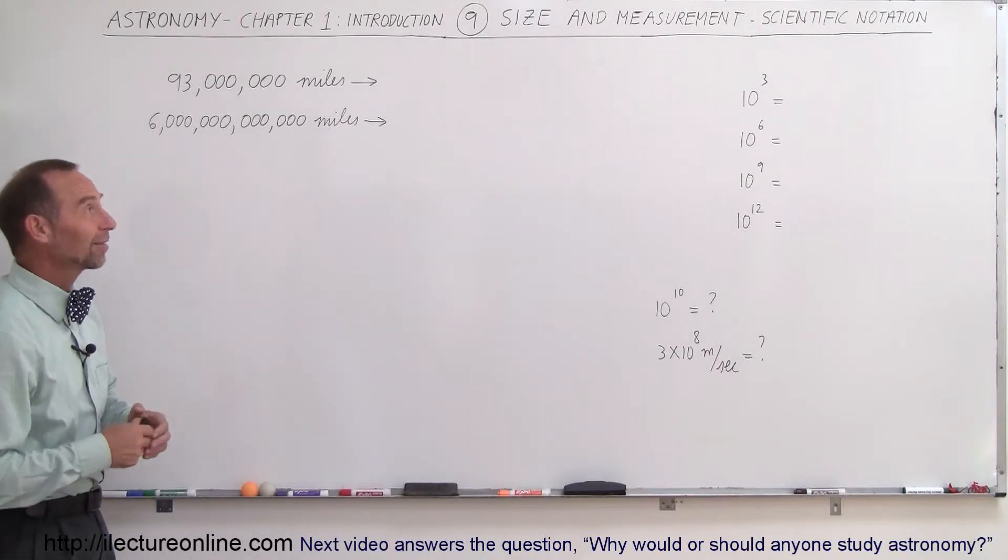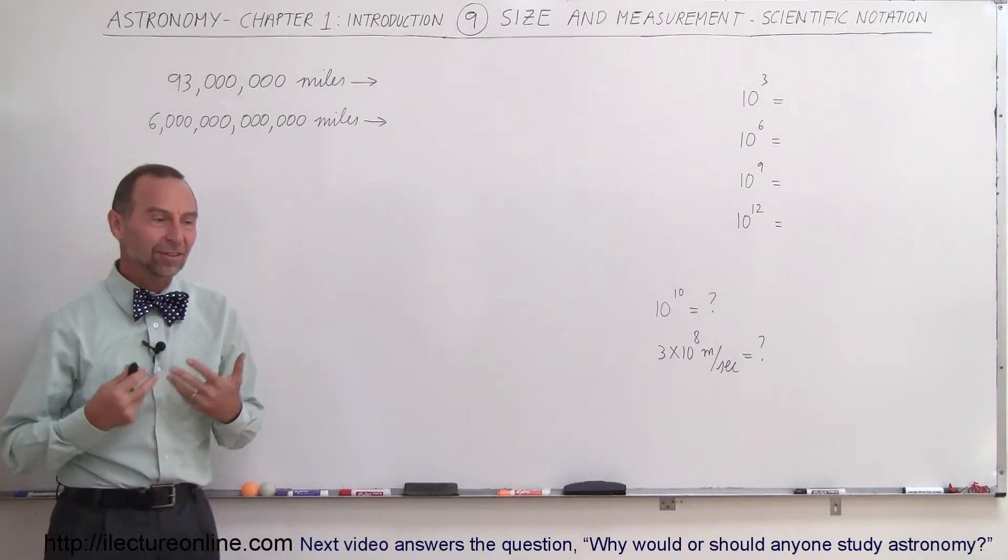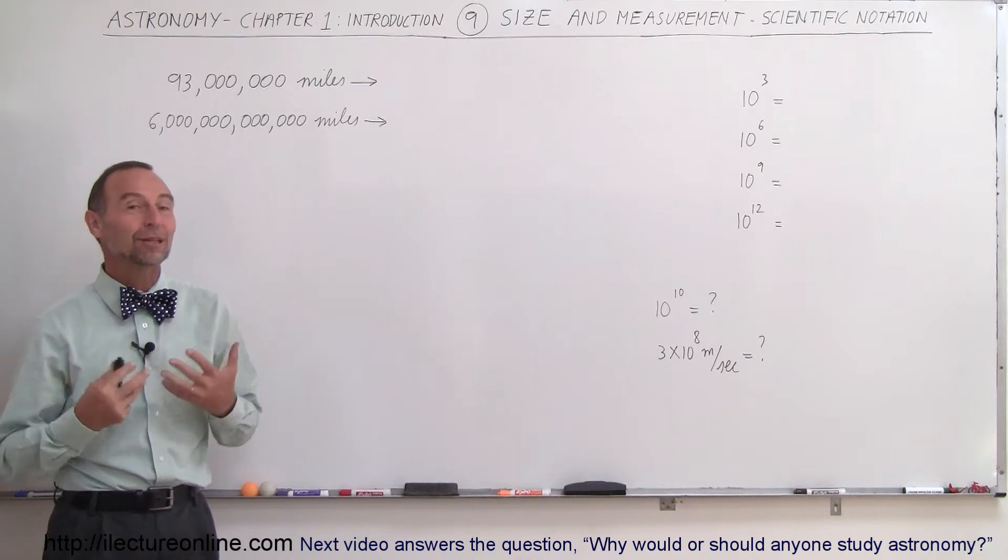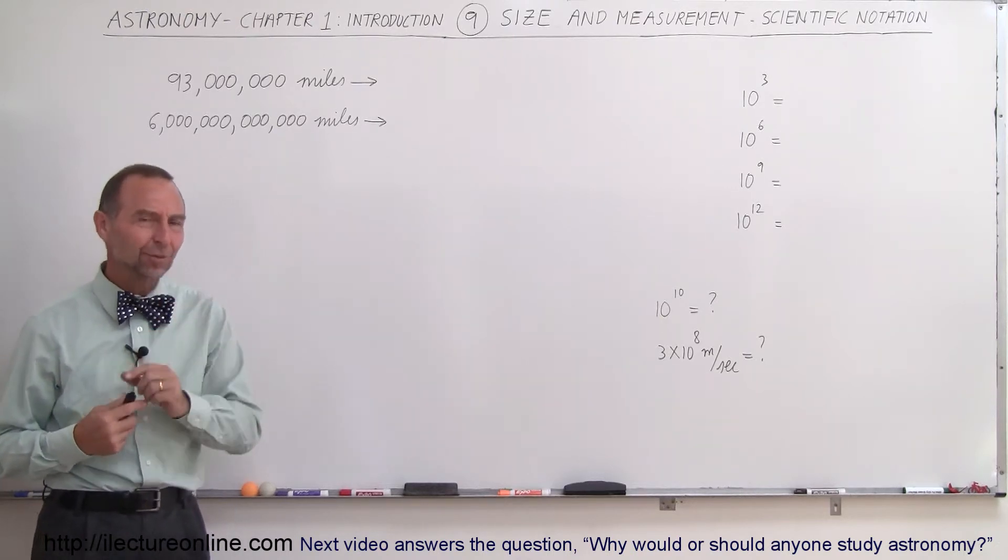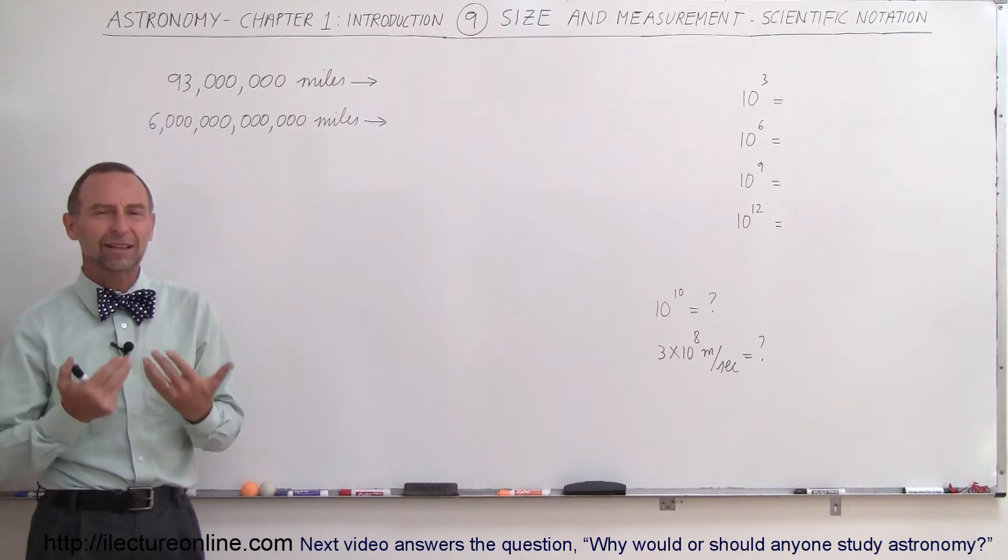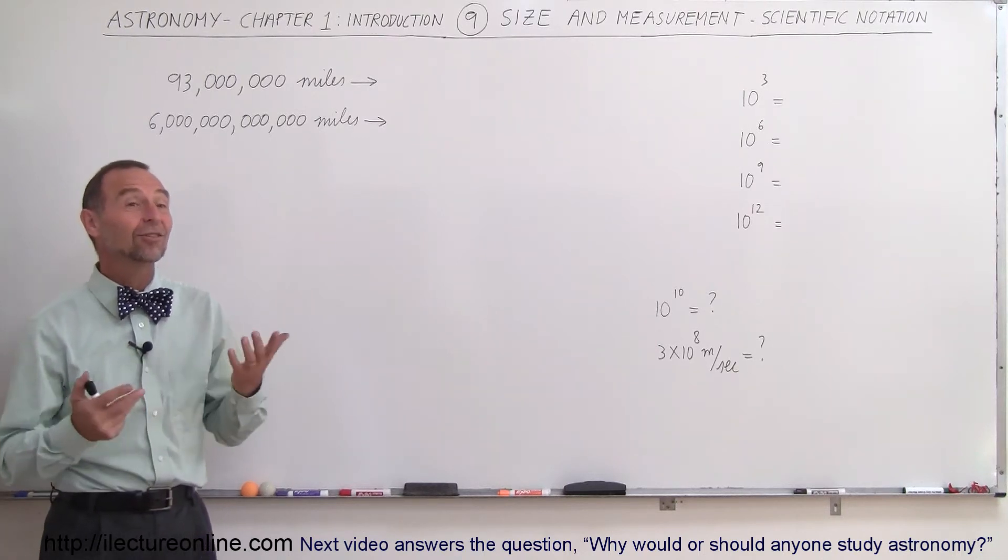Welcome to iLectureonline, and now let's talk about scientific notation. Yes, in astronomy we deal with very big numbers and sometimes very tiny numbers as well. And we need to be able to write those in scientific notation, otherwise we'd be writing a lot of zeros.